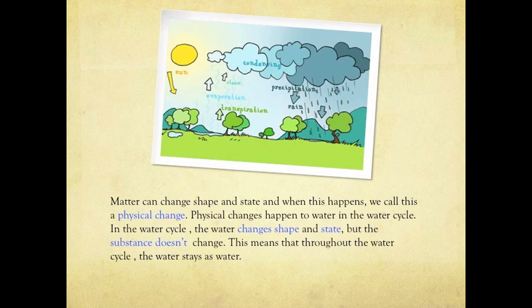Matter can change shape and state, and when this happens, we call this a physical change. Physical changes happen to water in the water cycle. In the water cycle, the water changes shape and state, but the substance doesn't change. This means that throughout the water cycle, the water stays as water.